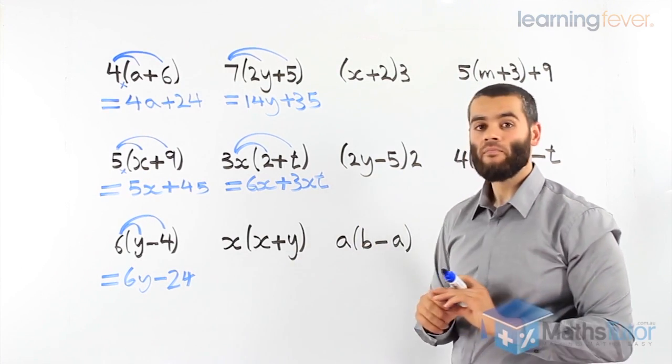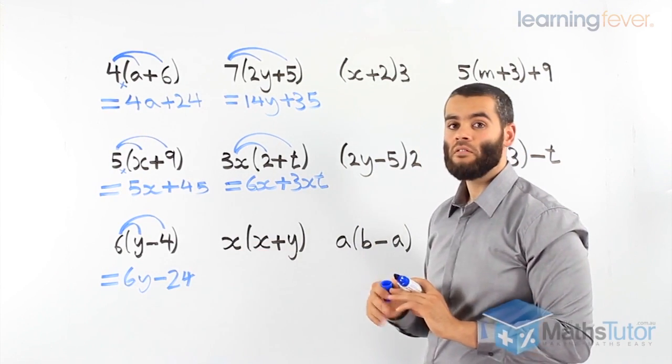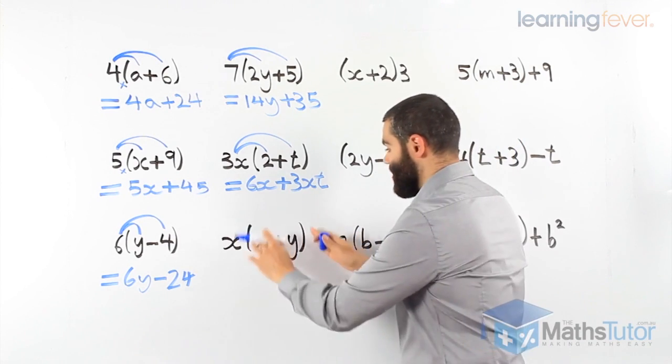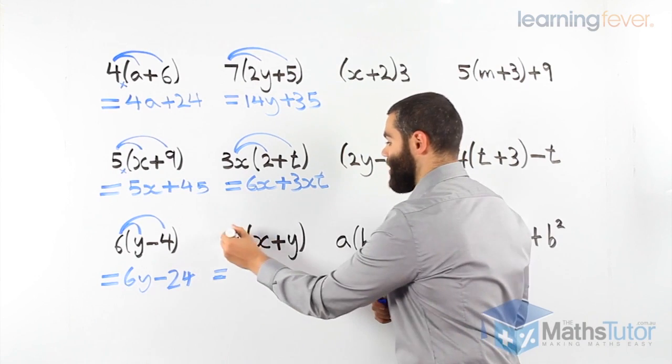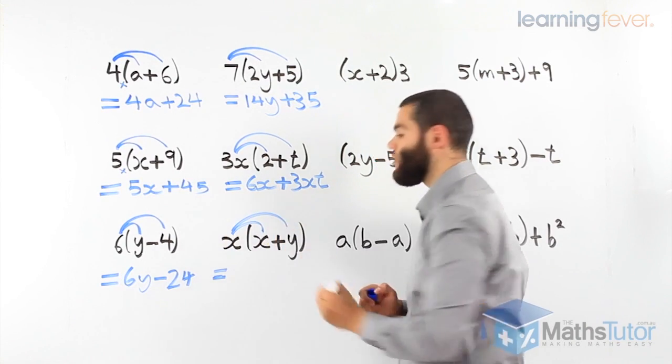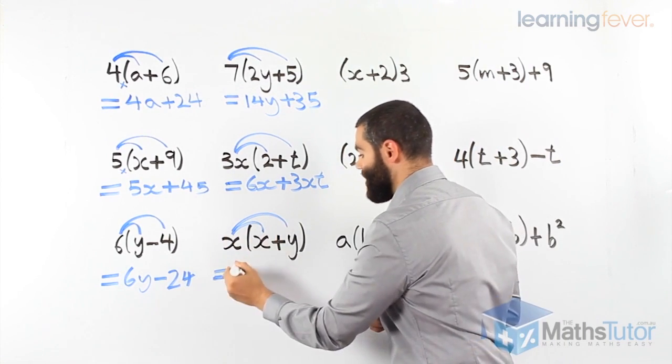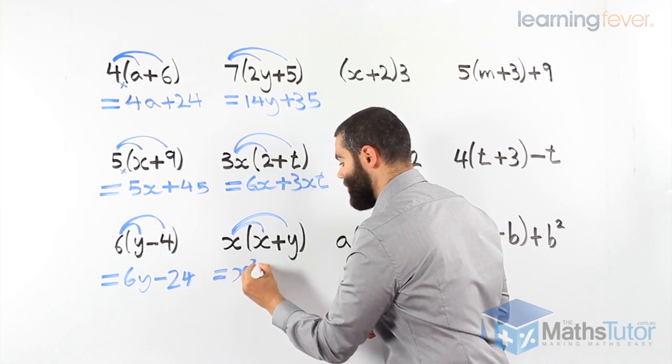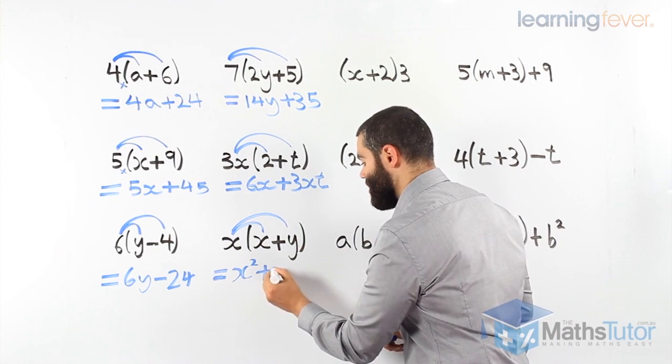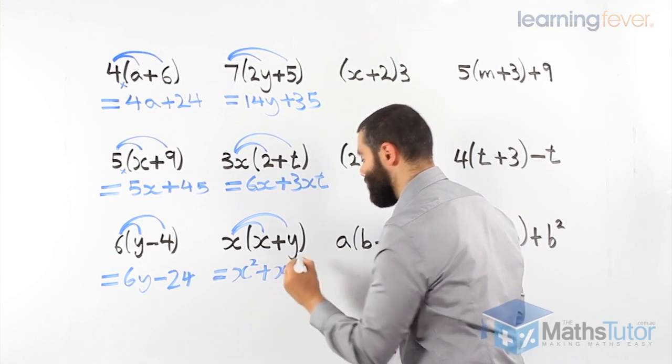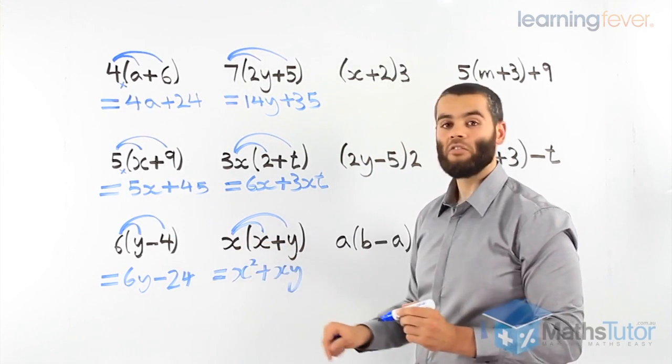Now, next one. x multiplied by everything inside. x times x, and x times y. x times x, we know is x squared. And x times y is x, y. x times x, x squared.